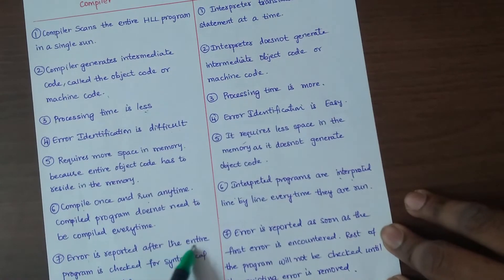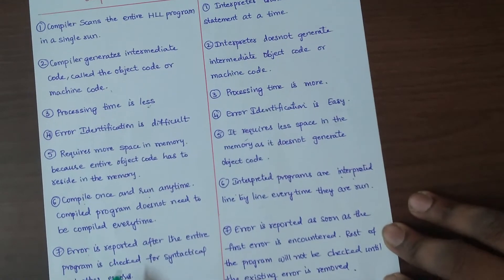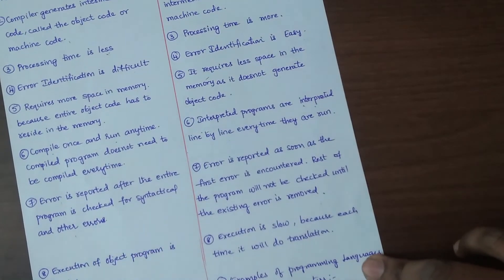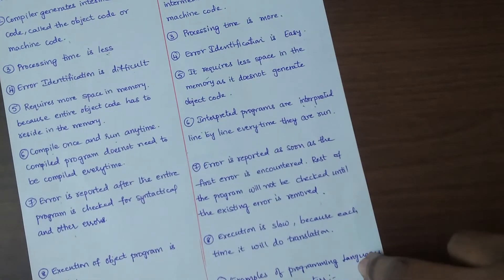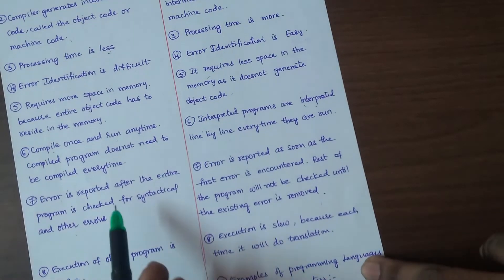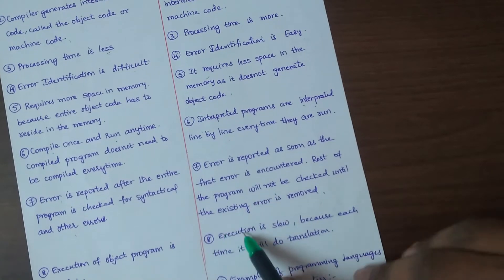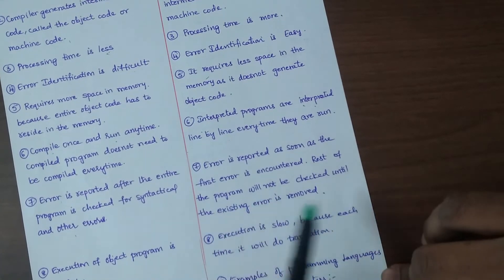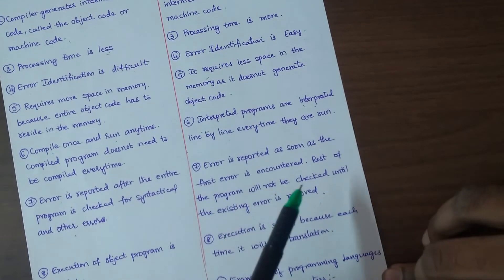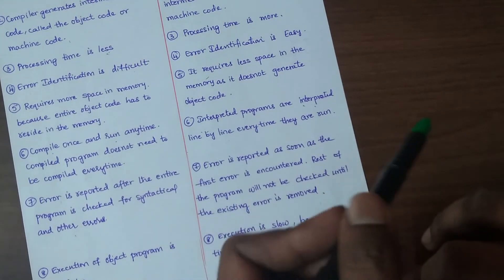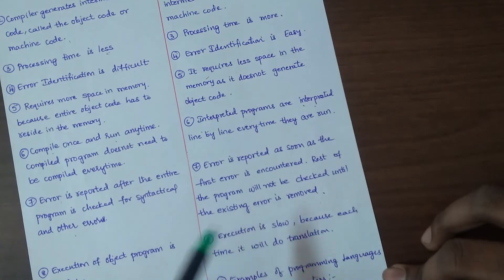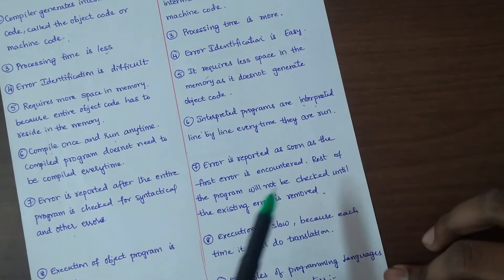Point 7: With a compiler, errors are reported only after the entire program is checked for syntactical and other errors. With an interpreter, errors are reported after each line — if there is no error, execution continues normally.